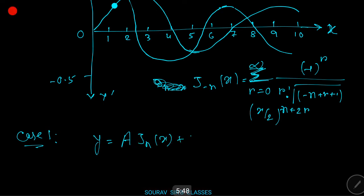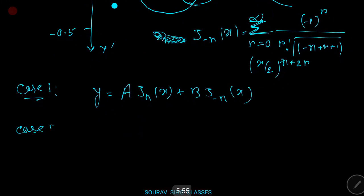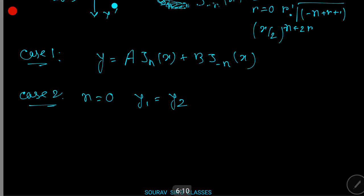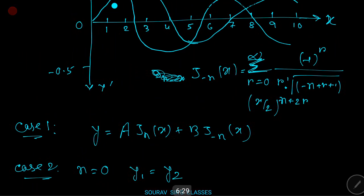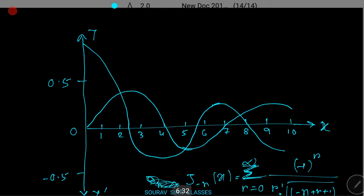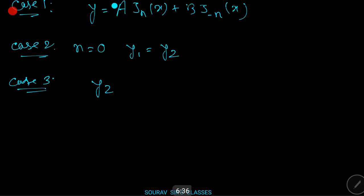Regarding J₋ₙ(x): Case 2 — if n = 0, then y₁ = y₂ and the complete solution is the Bessel function of order 0. Case 3 — if n is a positive integer, then y₂ is not a solution of the Bessel equation. Here y₁ fails to give a solution for negative values of n.